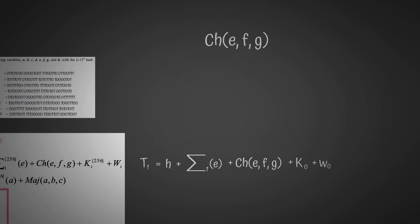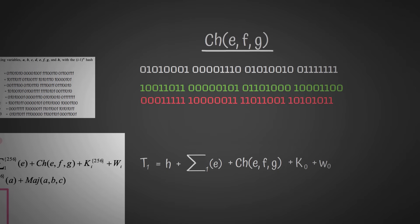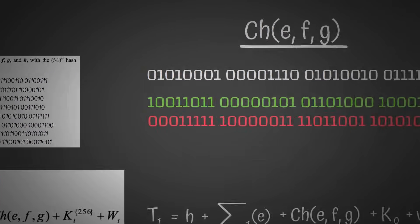And this CH function, the CH stands for choose. This first parameter here, E, plays an asymmetric role in this. We're going to use the bits from E to tell us, out of the inputs F and G, which ones to take as our final output. That may not make much sense, but here's an example. We have our first bit here, our leftmost bit, as 0.